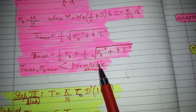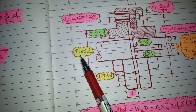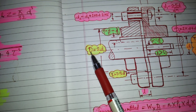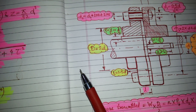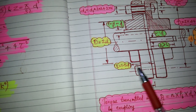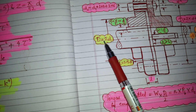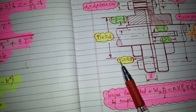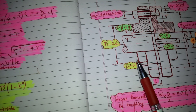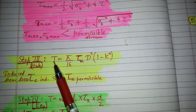Now we design the hub. The diameter of the hub D equals 2D, where D is the diameter of the shaft, and the length of the hub L equals 1.5 times the diameter of the shaft, as visible in the diagram.